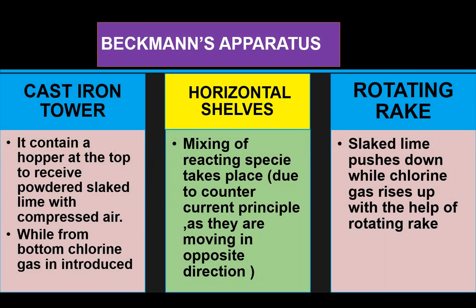In Beckmann's apparatus for the preparation of bleaching powder, we use a cast iron tower with rotating racks and eight horizontal shelves placed in the center. The cast iron tower contains a hopper at the top to receive powdered slaked lime with compressed air, while chlorine gas is introduced from the bottom. The two raw materials are slaked lime and chlorine gas.